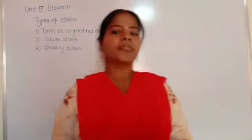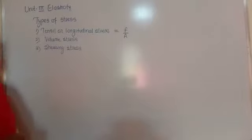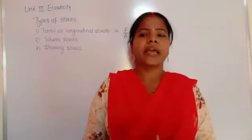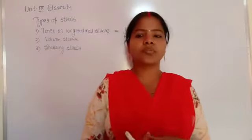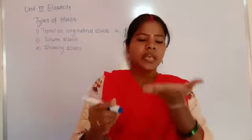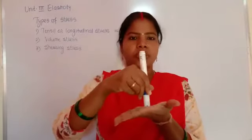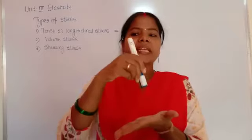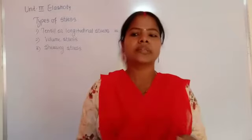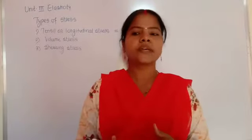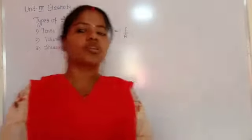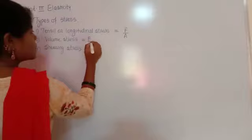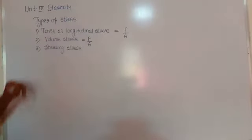The second type is volume stress. When a force acts perpendicular to the entire surface of a body, uniformly over all surface area, it produces a change in the size of the body but not its shape. This type of stress is called volume stress and equals force per unit area.